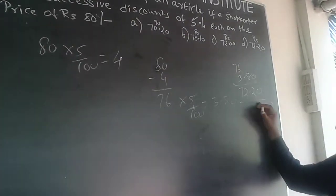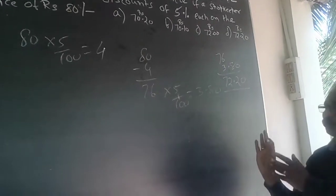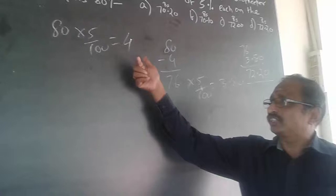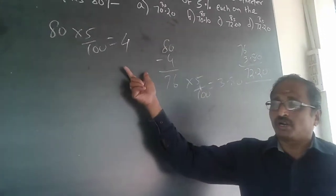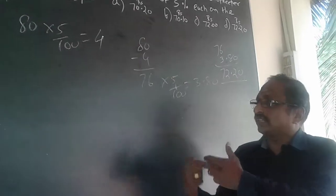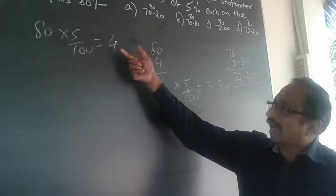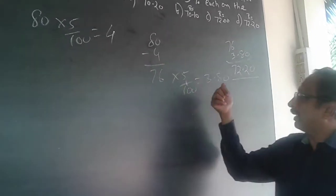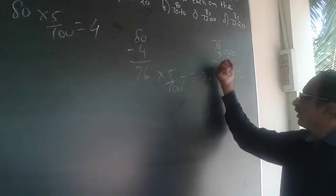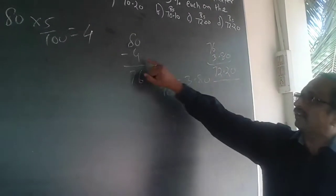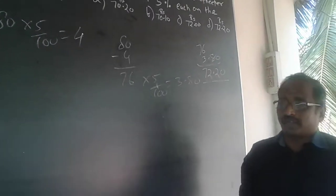Those who want to do some sort of a shortcut: first, you know 5% of 80 is 4. On this 4, you'll have to calculate what happens. I am reducing it by 4, so calculate 5% of 4, which is just 20 paise. Then 4 minus 20 paise equals 3 rupees 80 paise. You can simply minus 3.80 here. If it's successive gain, you add. So the answer is 72.20.